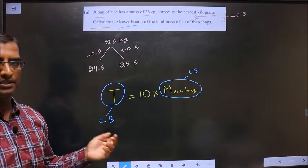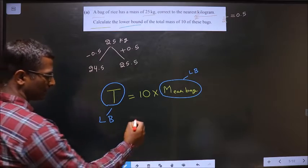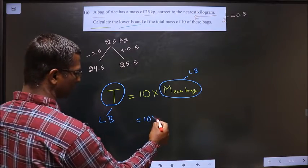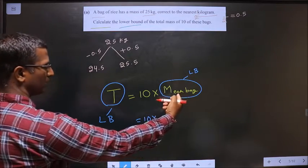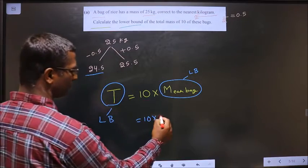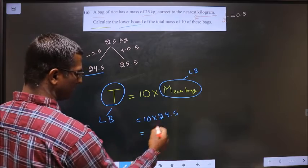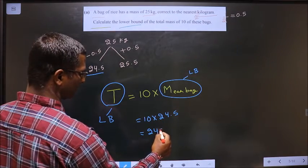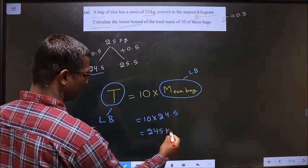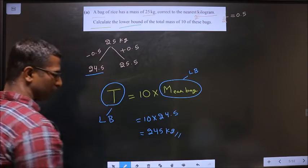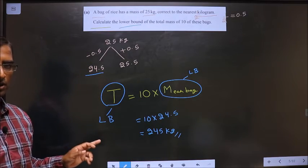So, now let us replace the values. So, 10 into lower bound for mass of each bag is 24.5. So, 10 into this, I get 245. Units are in kg. So, this is the answer.